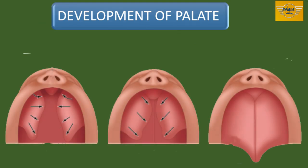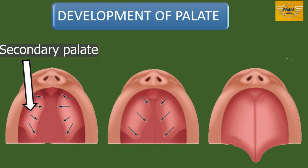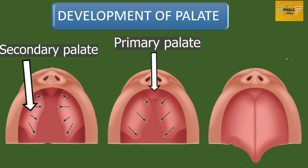We will now consider additional processes arising from the maxillary process, looking at the development of the palate. From each maxillary process, a palate-like shelf grows out — this horizontal process is called the palatal process of maxilla, or the secondary palate. We now have three components from which the permanent palate will be formed: the primary or primitive palate, which develops from the frontonasal process, and the two secondary palates, or palatal processes of the maxilla.